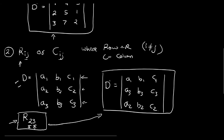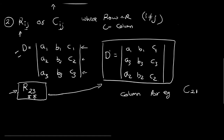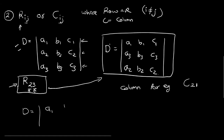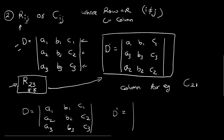This is also applicable for all the column operations. For example, if I want to perform column operation c21 on the determinant a1, b1, c1, a2, b2, c2, a3, b3, c3, we are interchanging the second column with the first column. The elements of the second column — b1, b2, b3 — go into the first column, the elements of the first column — a1, a2, a3 — go into the second column, and our third column remains as it is.